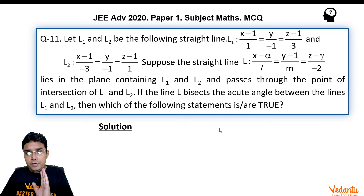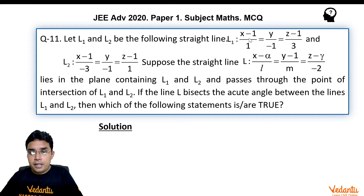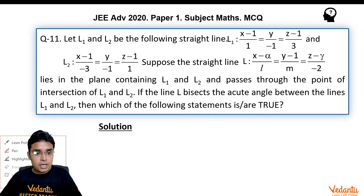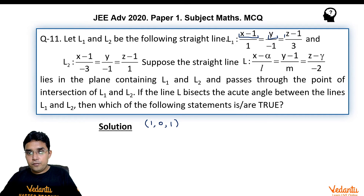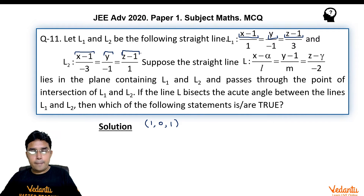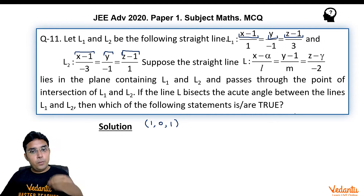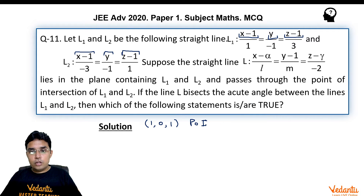Reading the question carefully, we immediately notice that the point of intersection of L1 and L2 is directly known as (1, 0, 1). Both lines share the same numerators: x−1, y, and z−1 in their symmetric forms. So (1, 0, 1) lies on both lines, giving us the point of intersection, which also lies on line L.